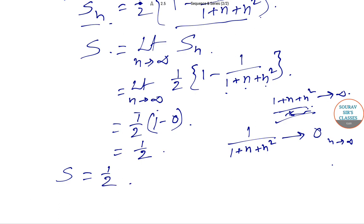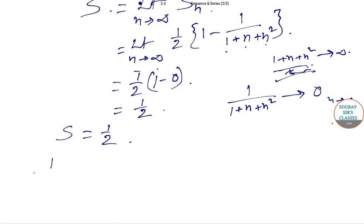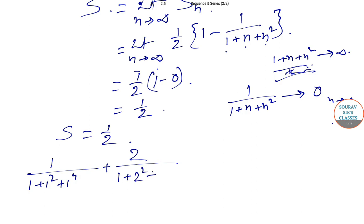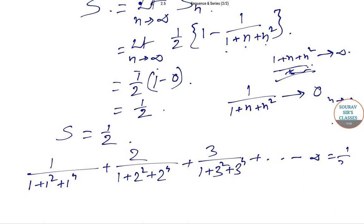So we get 1/(1+1²+1⁴) + 2/(1+2²+2⁴) + 3/(1+3²+3⁴) + ... till infinity = 1/2. Thank you.